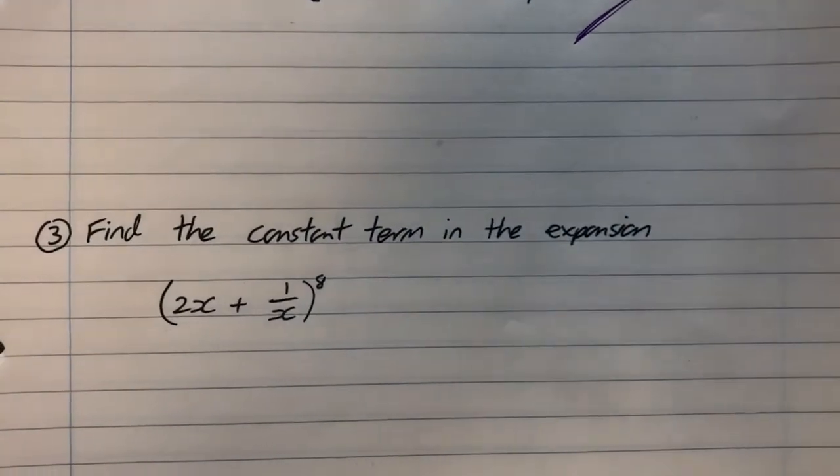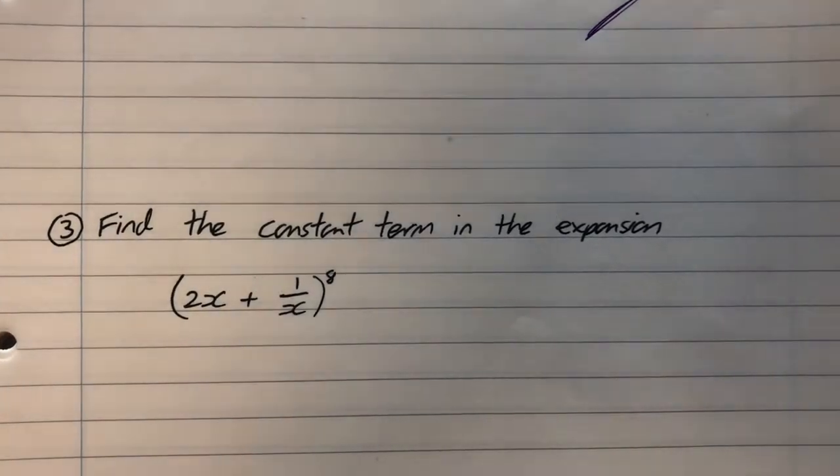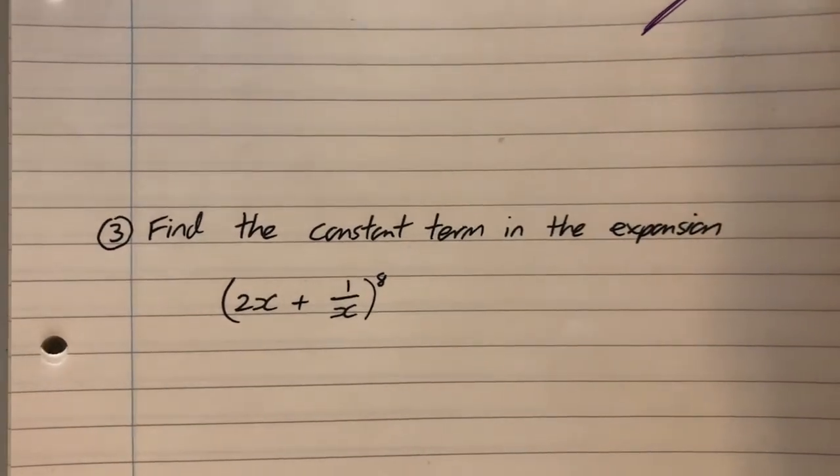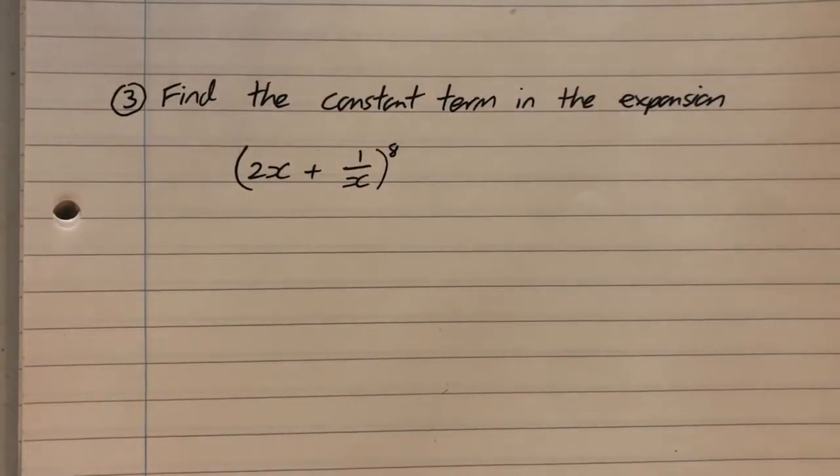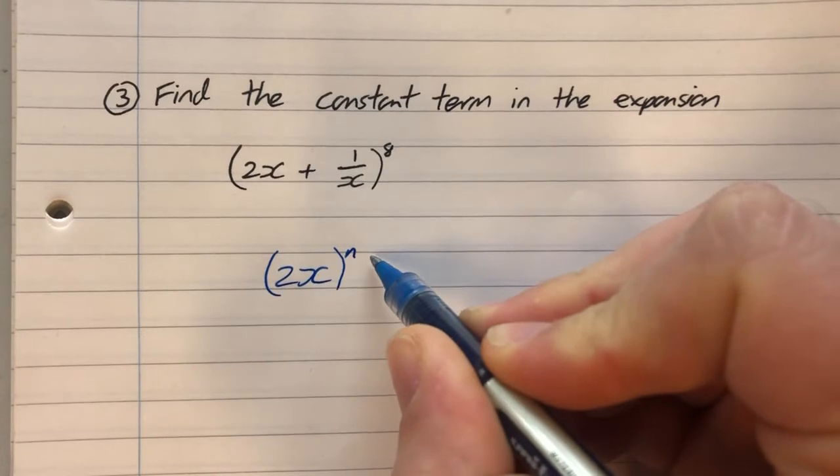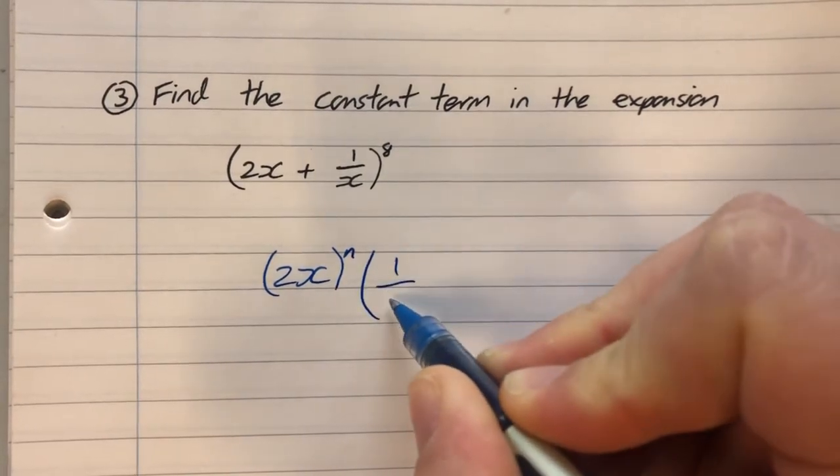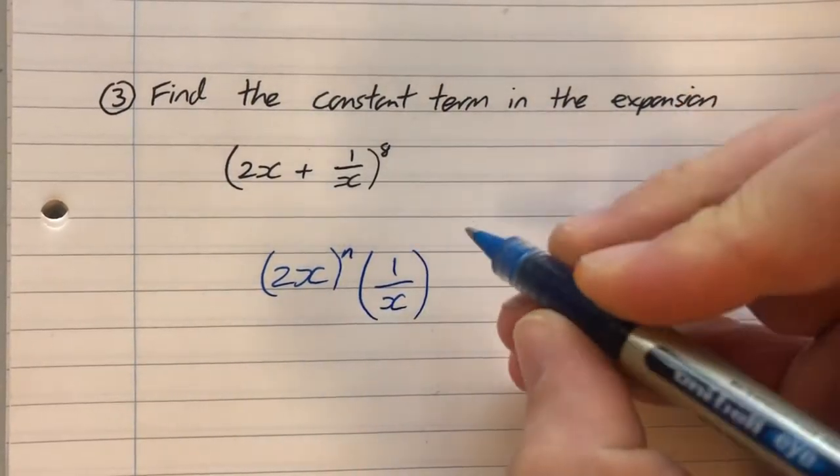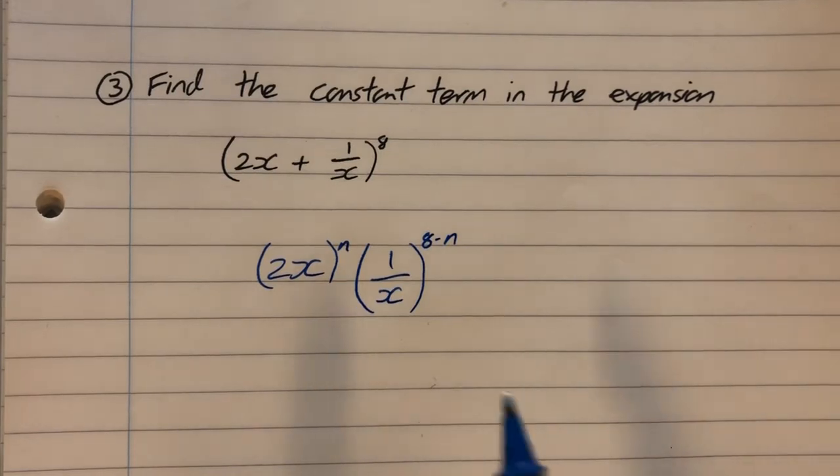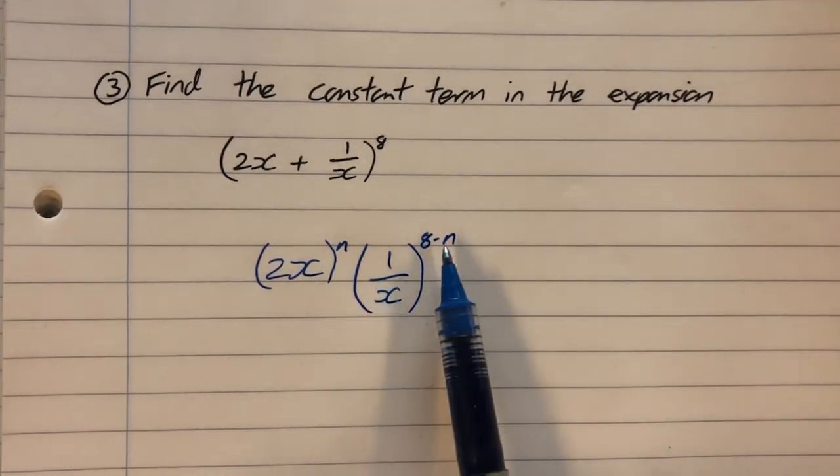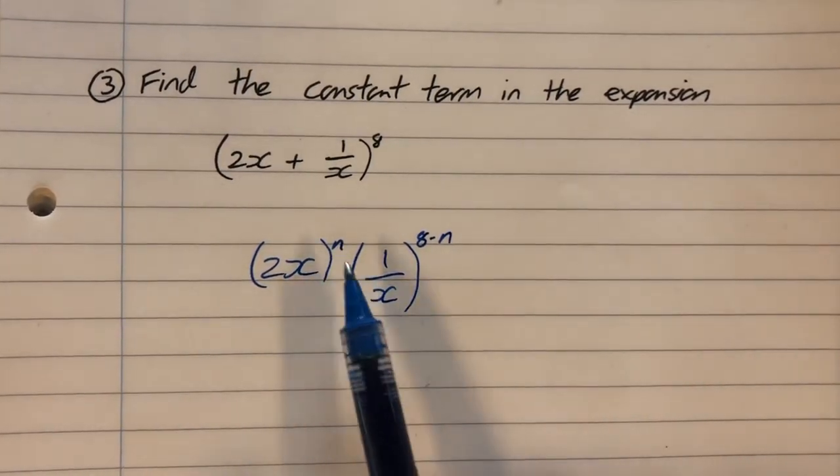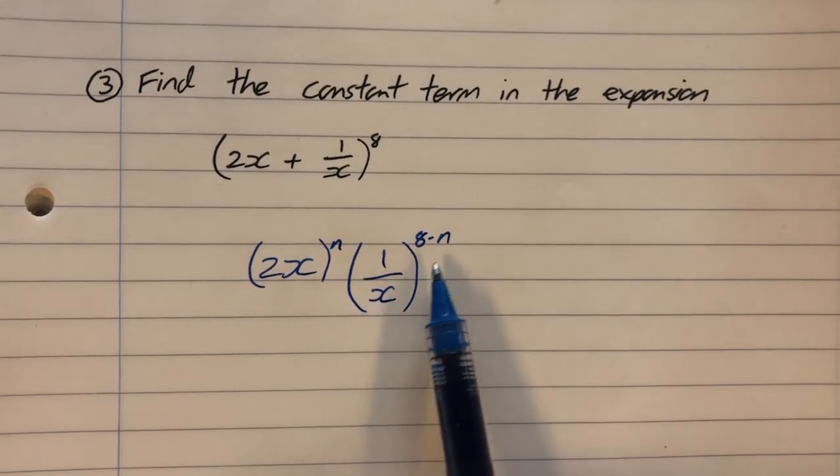Find the constant term in the expansion 2x plus 1 over x to the power of 8. So what I'm going to do here is just consider which term is going to be constant. I'm going to have 2x to the power of something and I'm going to have 1 over x times 8 minus that something. Because I've got to have 8 items all together.